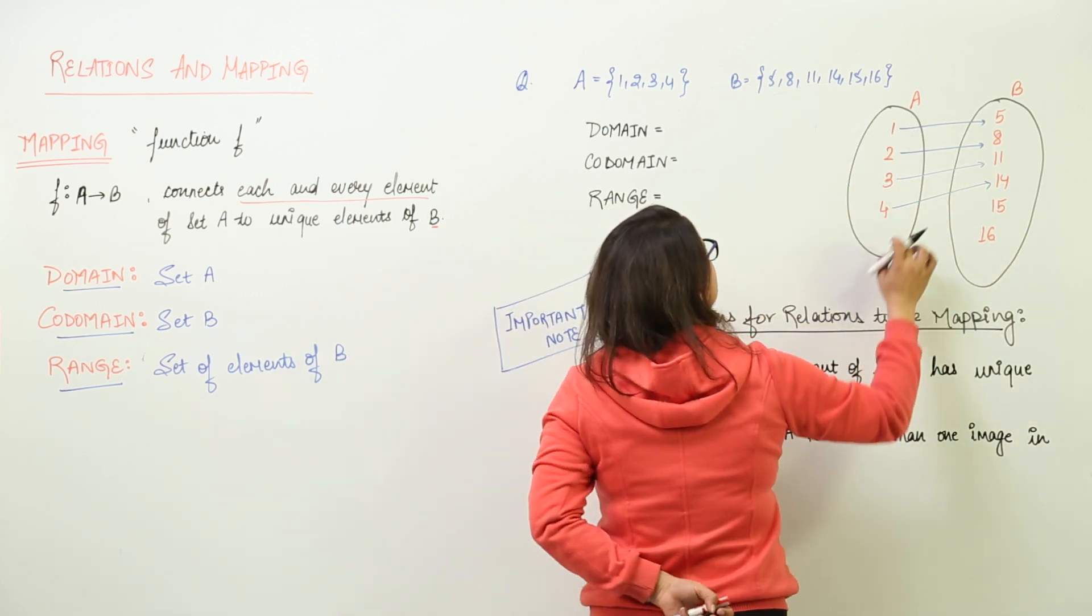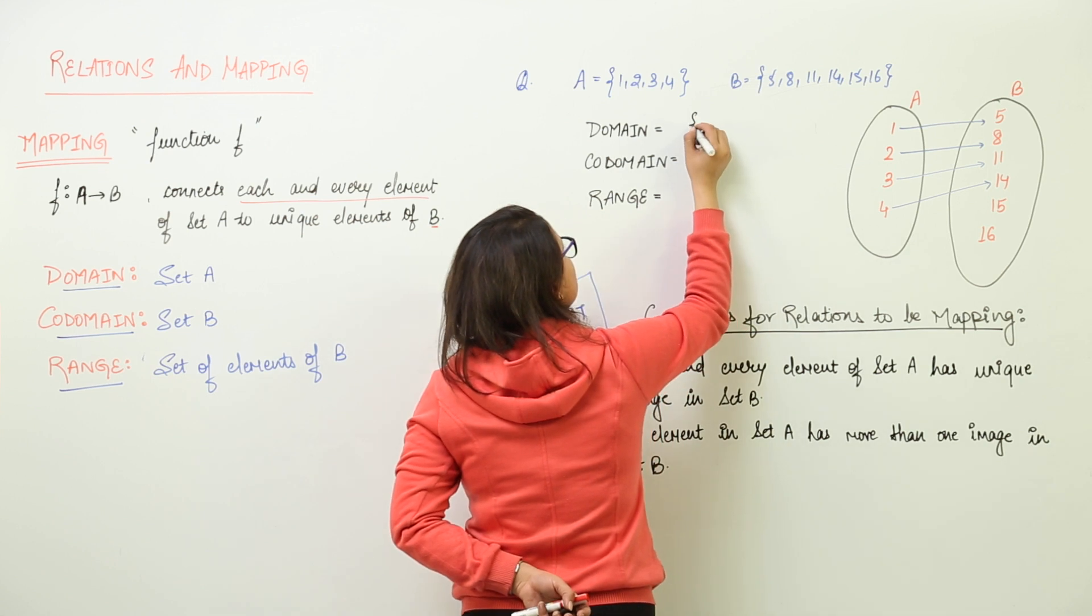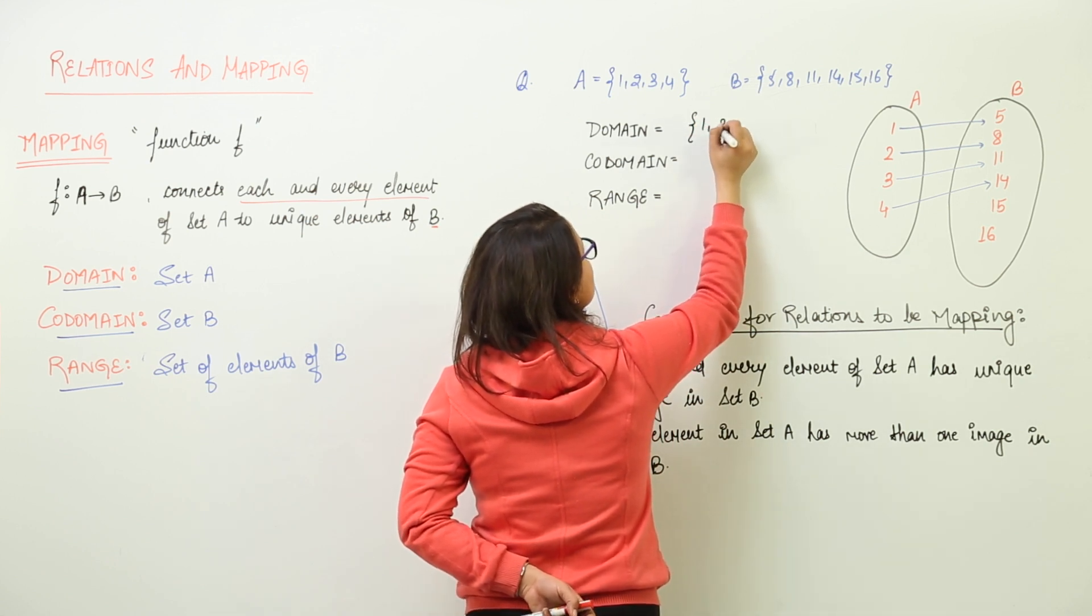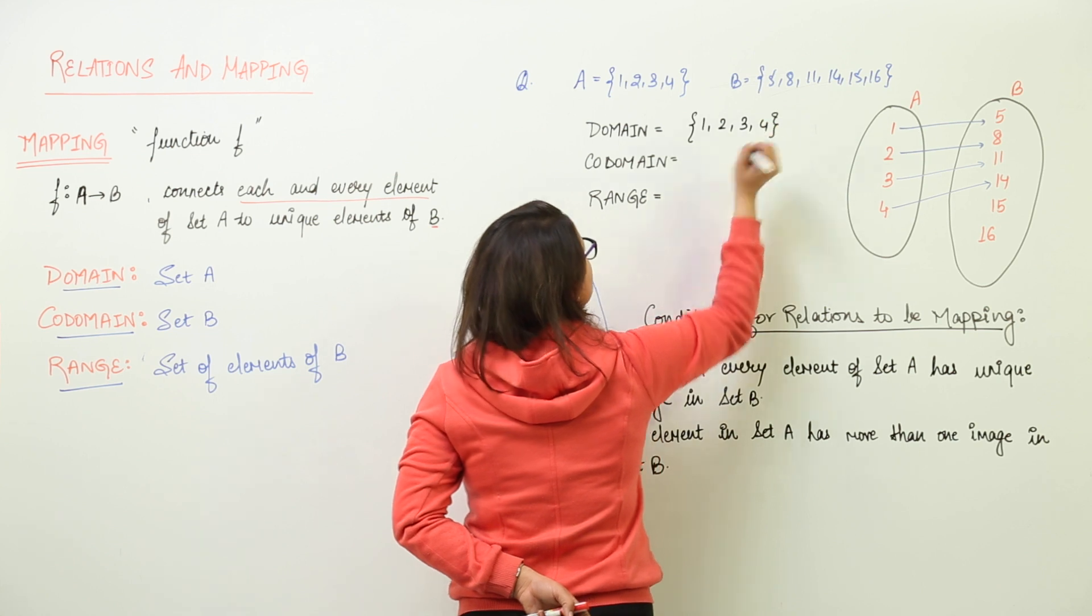Clearly all the values in A or you can say all the elements of A are the domains. So, you write 1, 2, 3, 4 in the domain section.